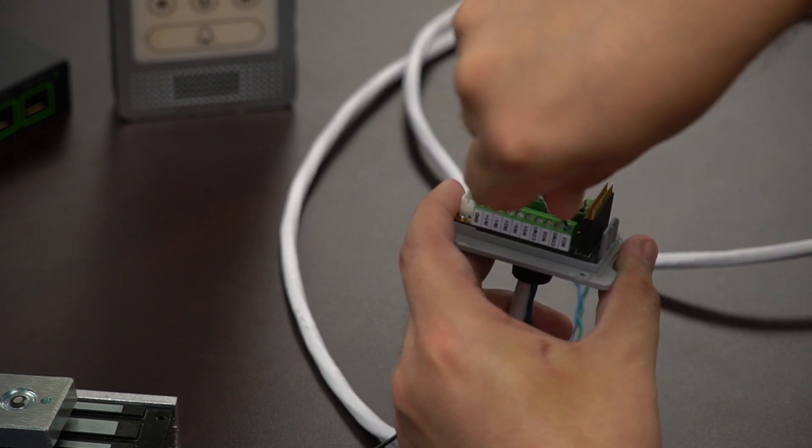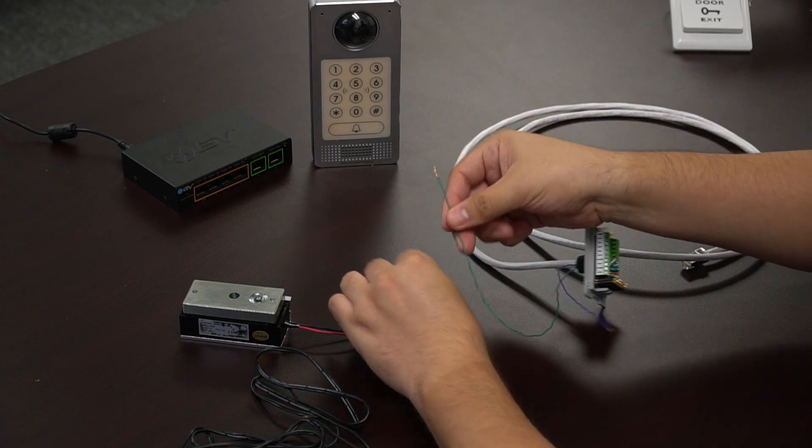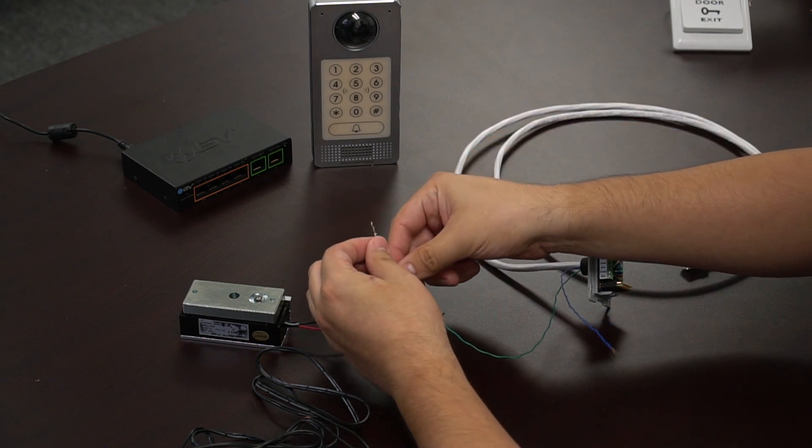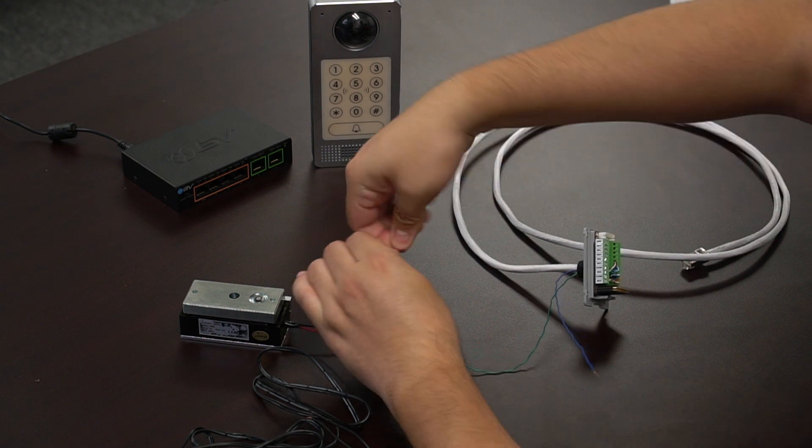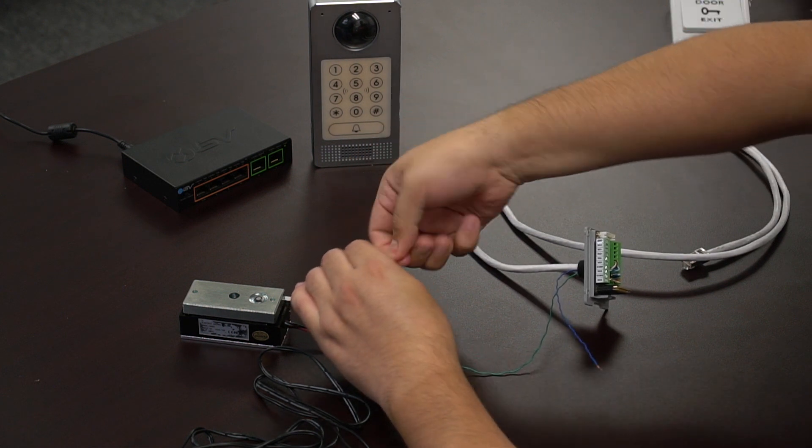So at this point you should only have two wires coming out of that GDS, the NC2 and COM2 ports. We are going to hook up the NC2 port directly to the ground on the magna lock.